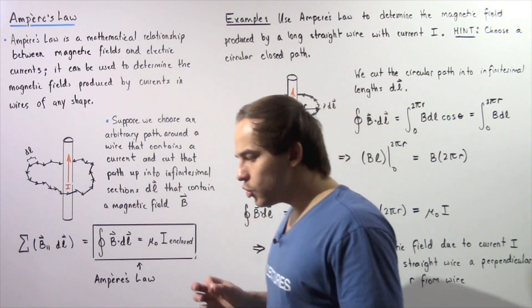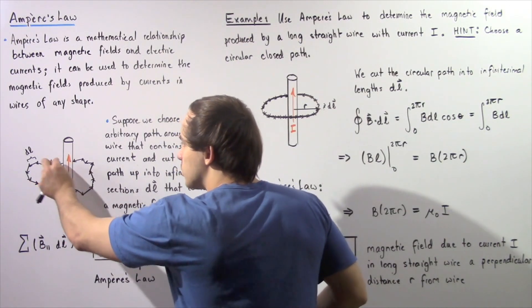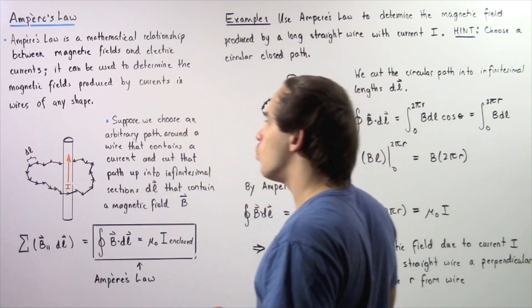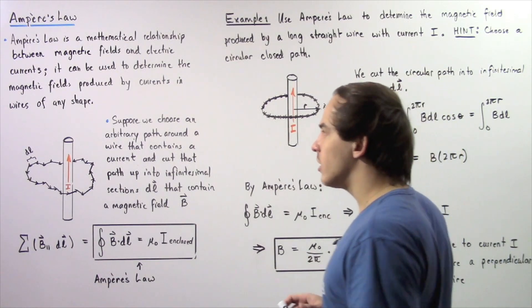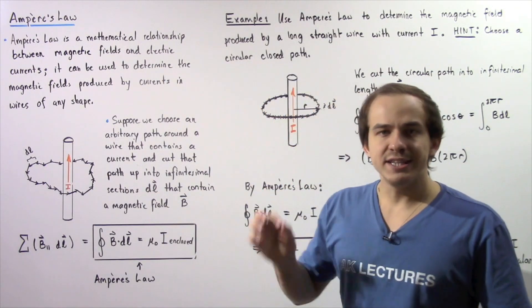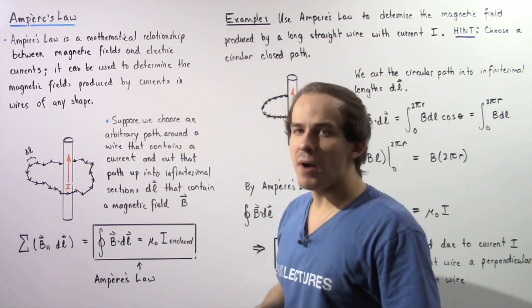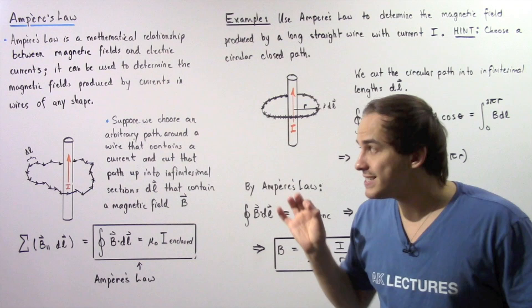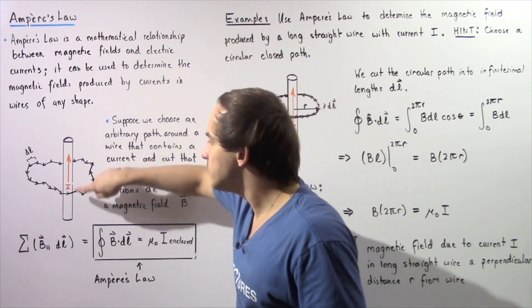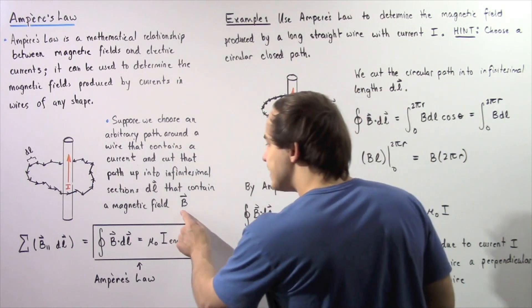Let's begin by choosing an arbitrary closed path around our wire, as shown by the following region. This is our arbitrarily chosen closed path around our wire that contains our electric current. We take our loop and divide it into infinitely small segments given by DL. Each one of these segments DL has its own magnetic field B that exists as a result of the electric current passing through our wire.